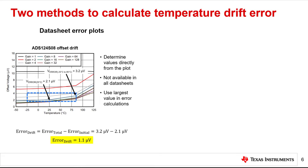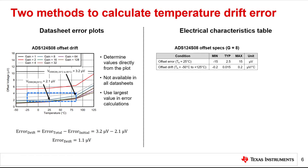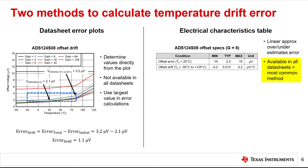Calibration is discussed in more detail in a subsequent Precision Labs module. The second method uses the specifications given in the electrical characteristics table to determine temperature errors. One challenge with this method is that the datasheet drift specifications represent a linear approximation of the error over temperature. If the actual error response is nonlinear, the electrical characteristics method can under or overestimate the error. The benefit of the second method is that these error specifications are available in all datasheets, allowing a fair comparison between different devices or systems. Therefore, estimating temperature error using the electrical specifications is the most common method.